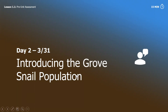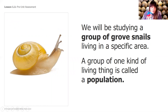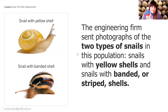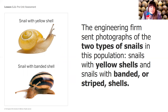This is technically day two: introducing the grove snail population. We are going to be learning about grove snails and studying how they live. A group of grove snails living in a specific area is what we're really going to be looking at. A bunch of the same kind of living thing or organism is called a population — that's another word you'll be hearing a lot. The engineering firm sent photographs of two types of snails: ones with yellow shells and ones with banded or striped shells.